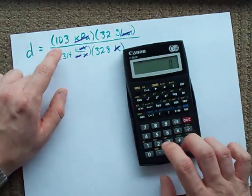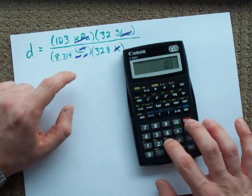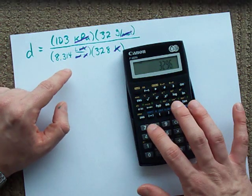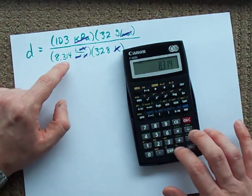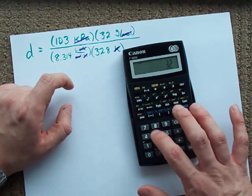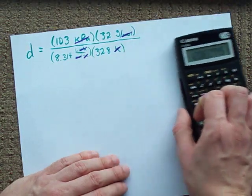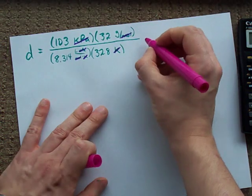Let's do this on the calculator. 103 times 32 divided by 8.314 divided by 328. That's 1.21 grams per liter.